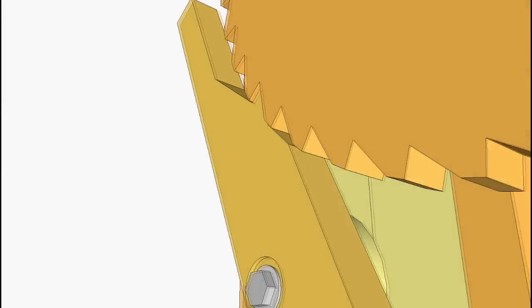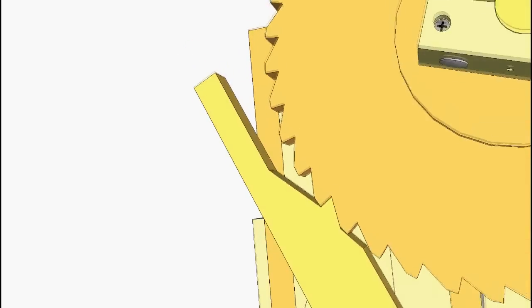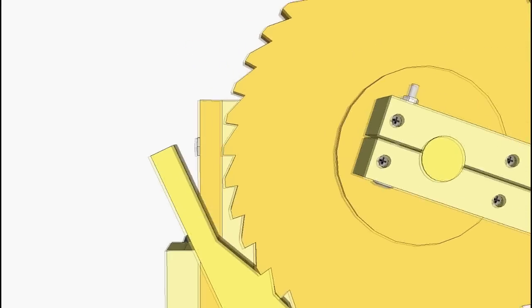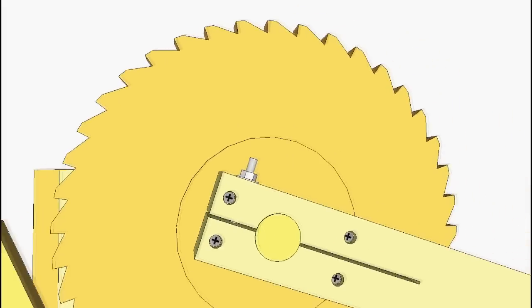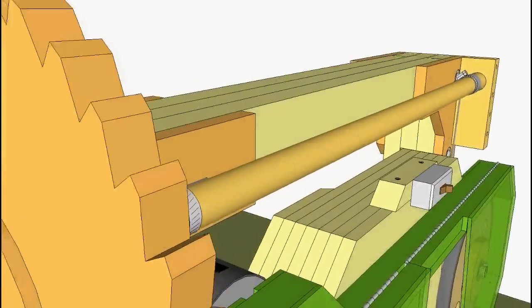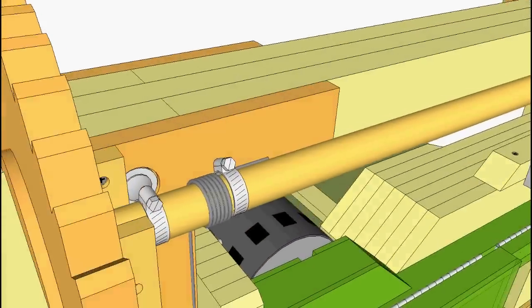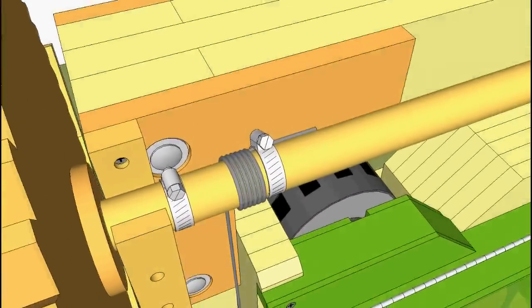Here's the thing that actually catches the sprocket, which locks the saw at a certain height. Now panning past the attachment for the height adjustment crank. Zooming around here, you can see the cable as it winds onto the shaft. It's held on with hose clamps.